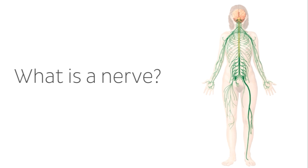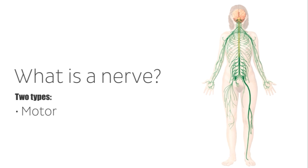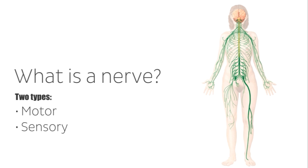A nerve can therefore convey one of two types of information. Motor information — that is, impulses from the brain and spinal cord to affect a motor movement in an organ — or sensory information, that is, information collected by the peripheral body to be sent to the brain and spinal cord.